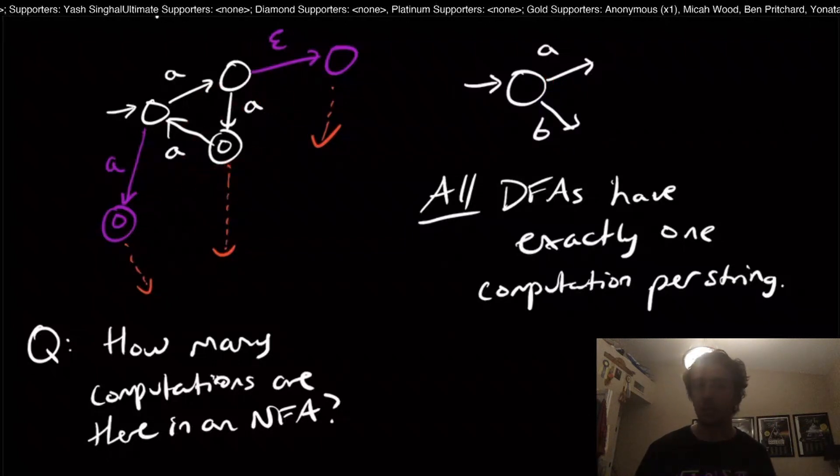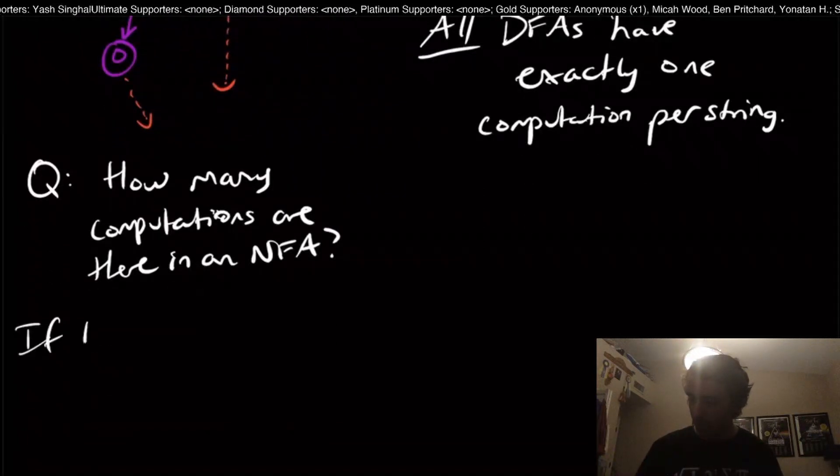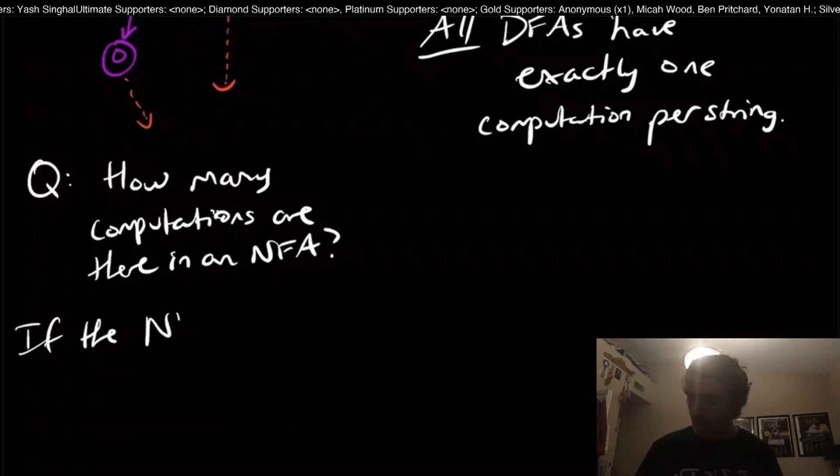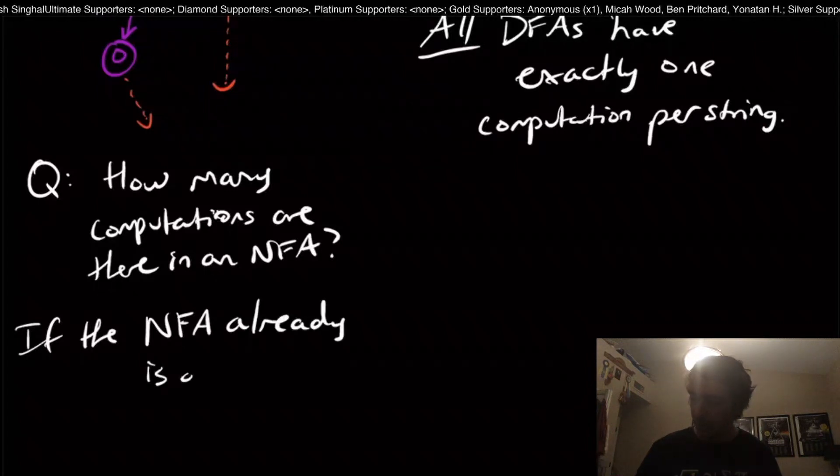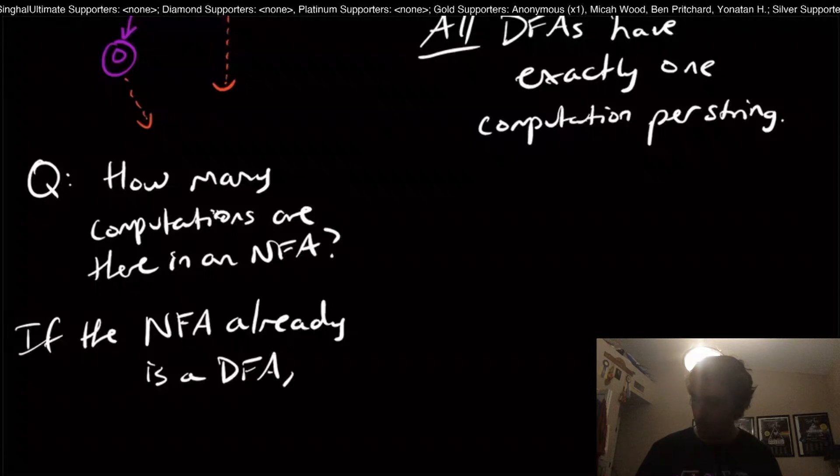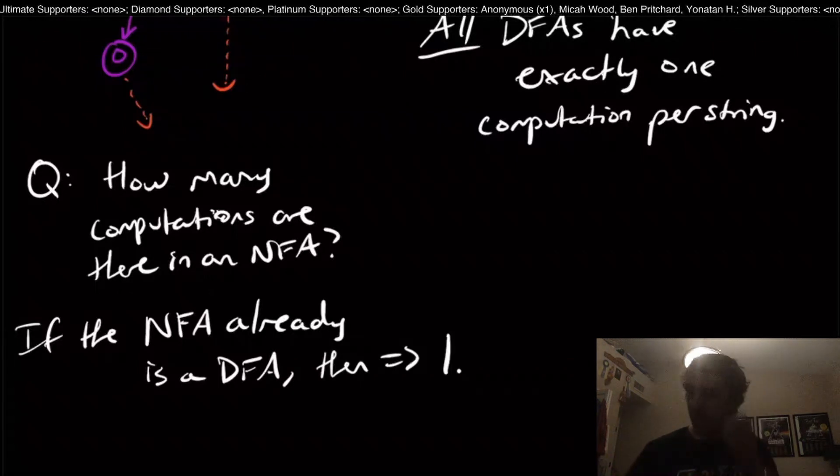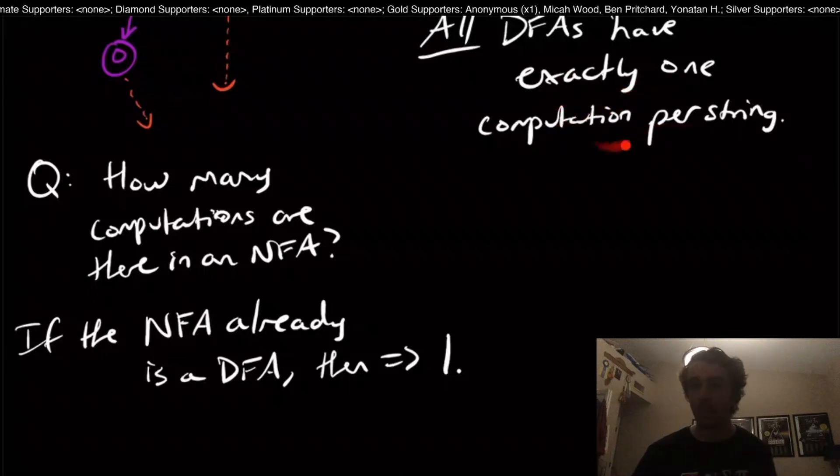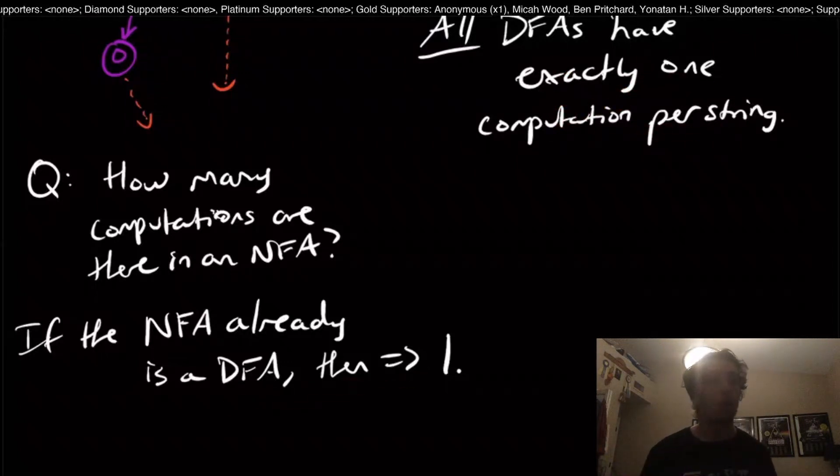NFAs is basically just a free for all. So if the NFA already is a DFA, then the answer is one. Because every DFA has exactly one computation per string. Therefore, the answer is one, if the NFA is already a DFA.